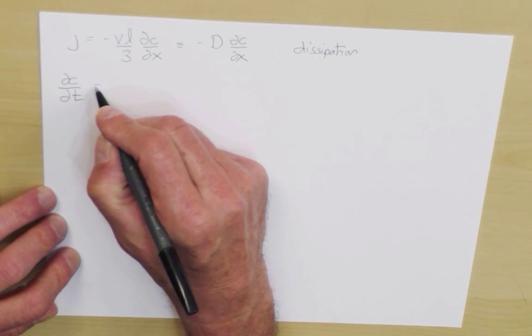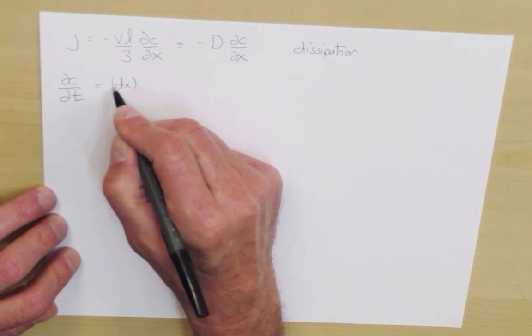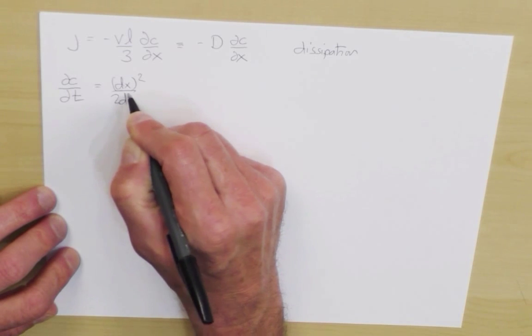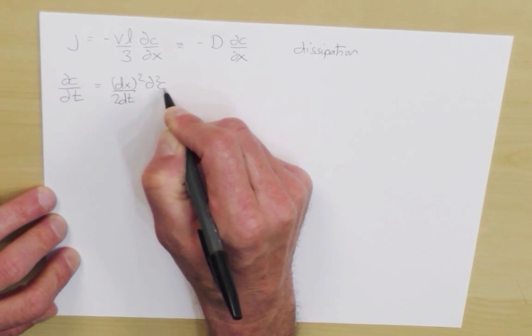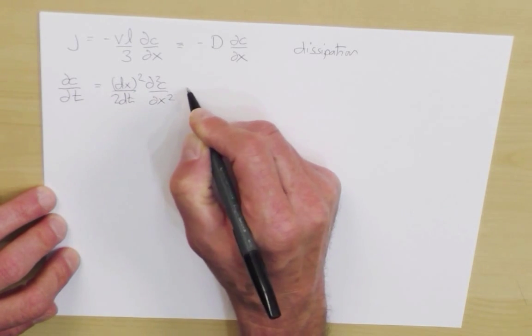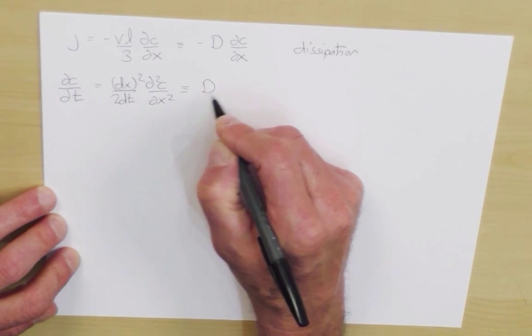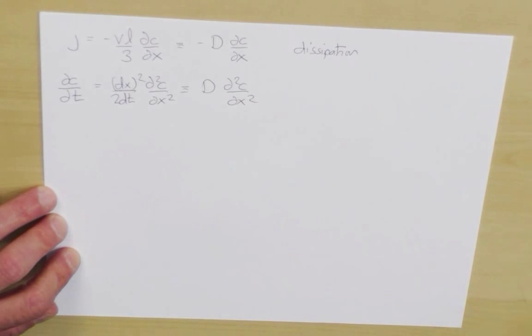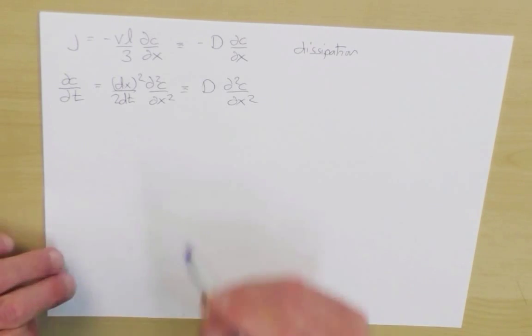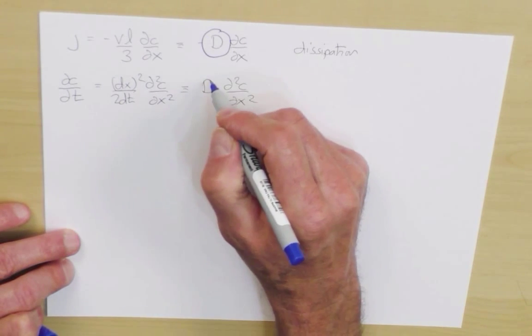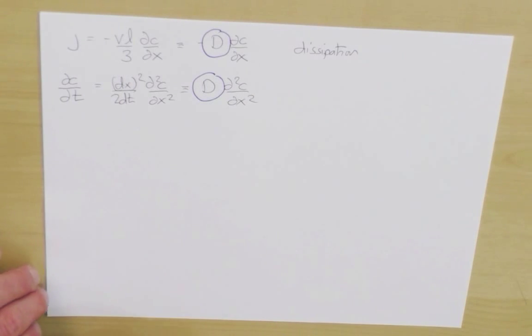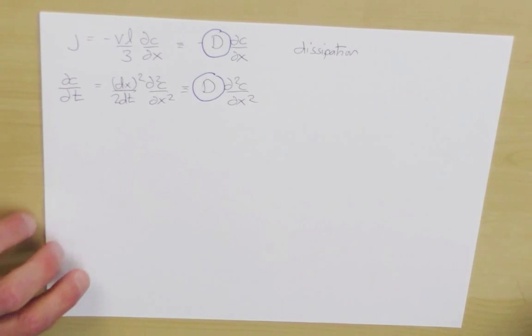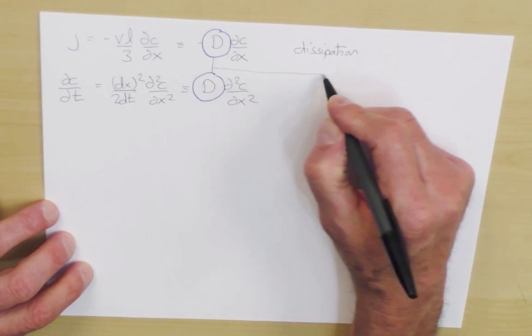Namely dc by dt, and that was equal to dx squared divided by 2 dt times d second c by dx squared. And this again we defined as a diffusion coefficient times d second c by dx squared. So here we see two very different formulas and two very different contexts, and here appears the diffusion equation, and here the question is, are these equal?